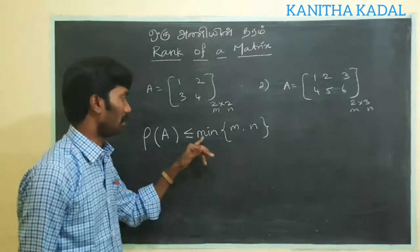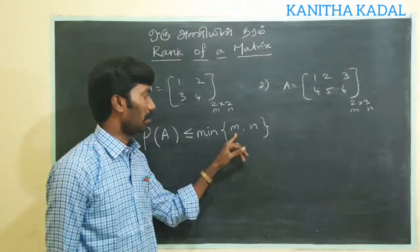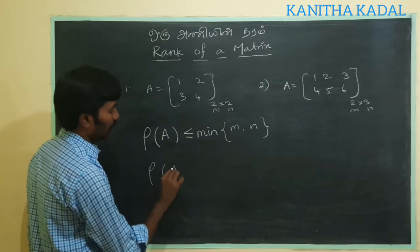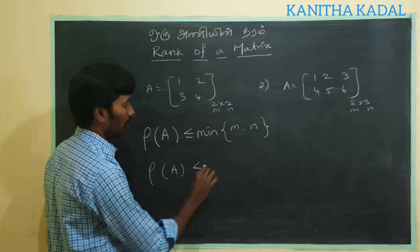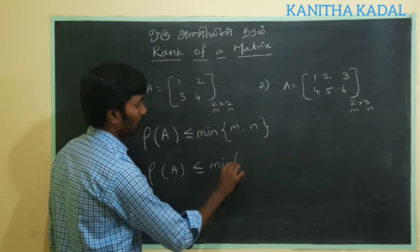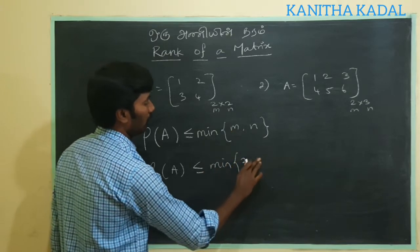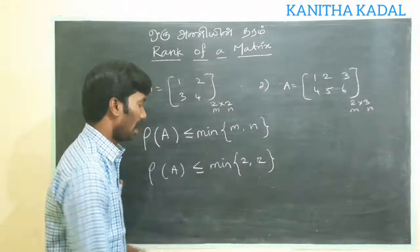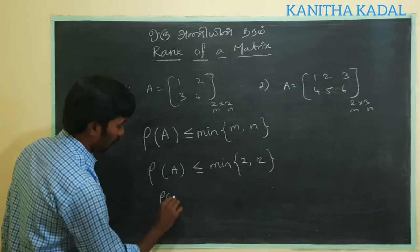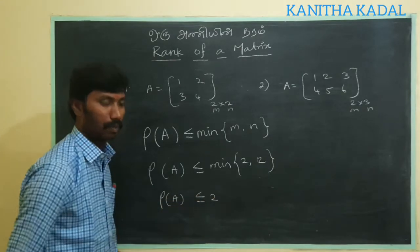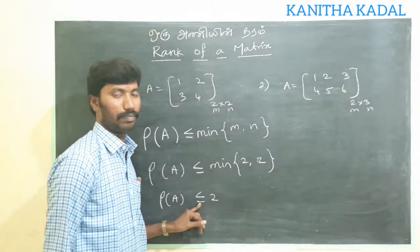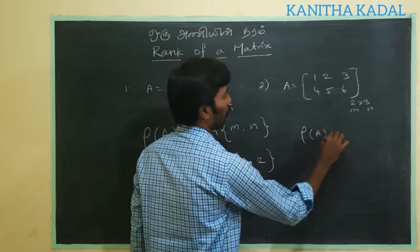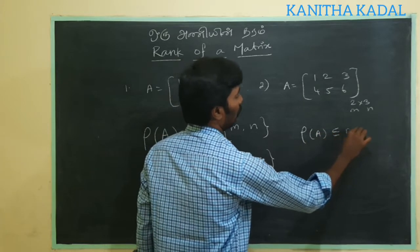What does this mean? Minimum — minimum is M. If you add the sum, then rho of A is less than or equal to minimum of M. M is 2, N is 2, then rho of A is less than or equal to 2.